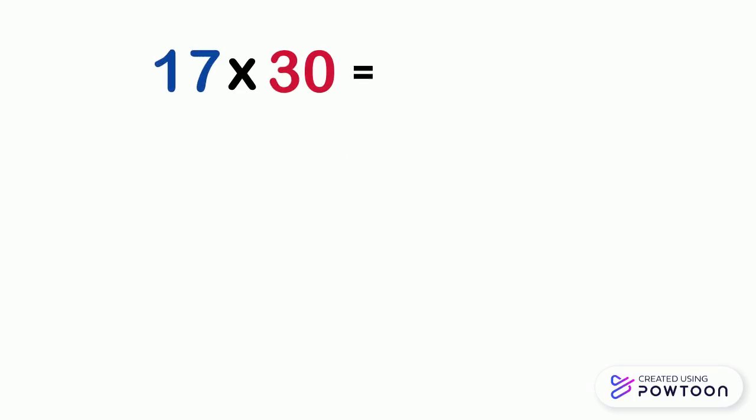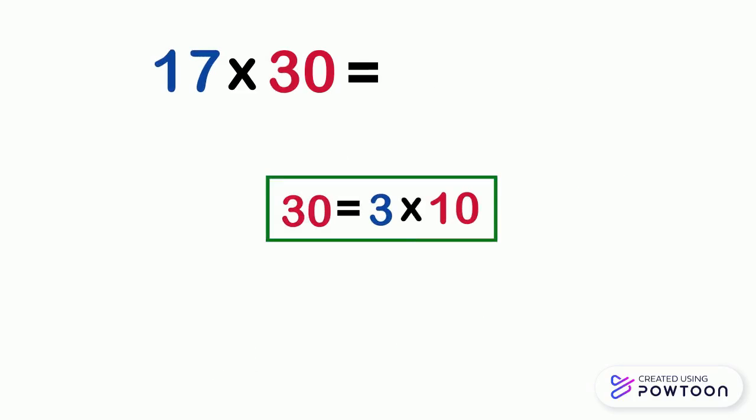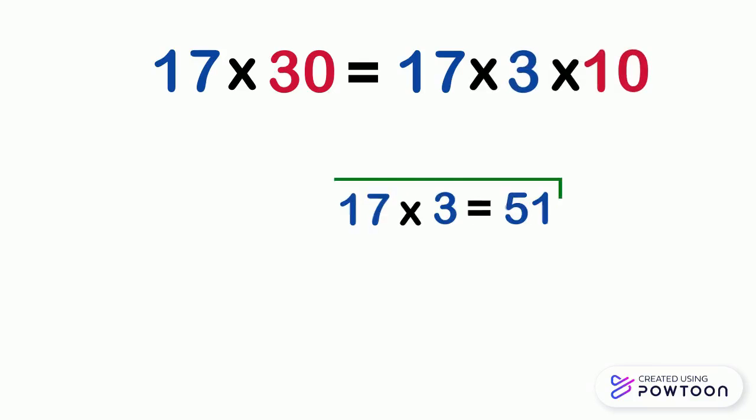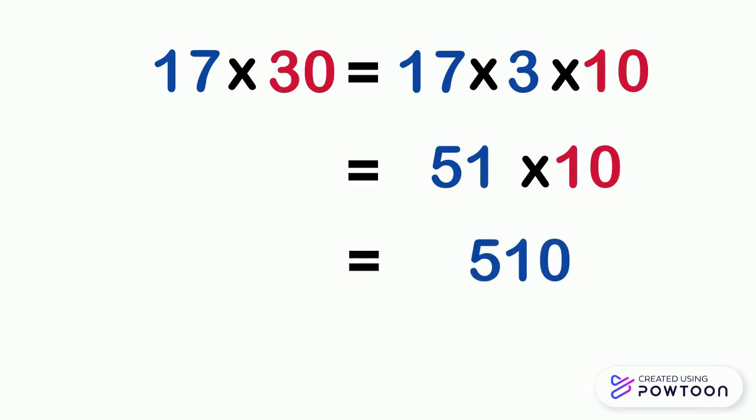Multiply 17 by 30. 30 is 3 times 10, so 17 times 30 equals 17 times 3 times 10. 17 times 3 equals 51, so 17 times 30 equals 17 times 3 times 10 equals 51 times 10, which is equal to 510.